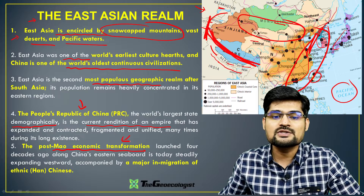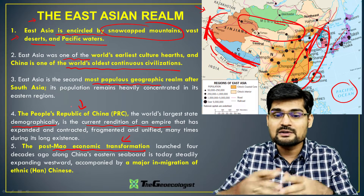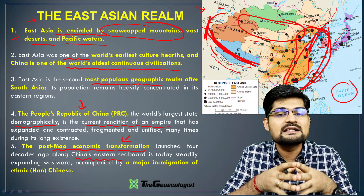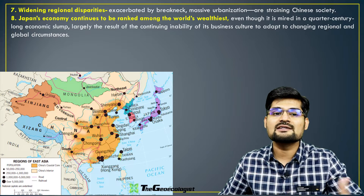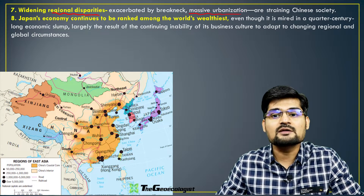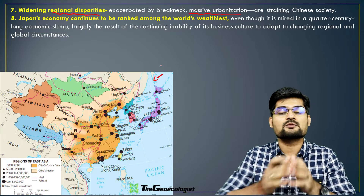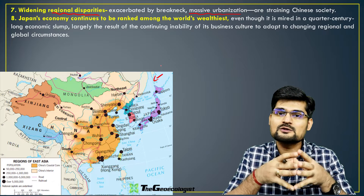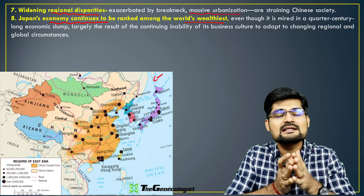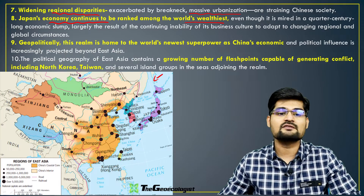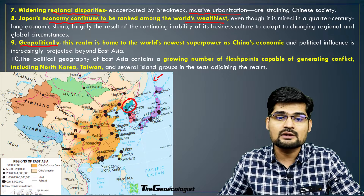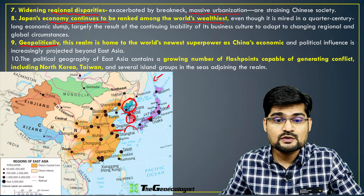The post-Mao economic transformation has led to a great leap forward in China's economy. China's eastern seaboard has become one of the most sought-after places for world economics, though regional disparities have widened alongside it. Massive urbanization and population increase create vulnerabilities in terms of climate change and pandemic risk. Japan's economy continues to be ranked as one of the most affluent economies in the world. Geopolitically, this area is one of the most important in the world, with issues like the North Korea–South Korea divide and China–Japan tensions in the South China Sea.